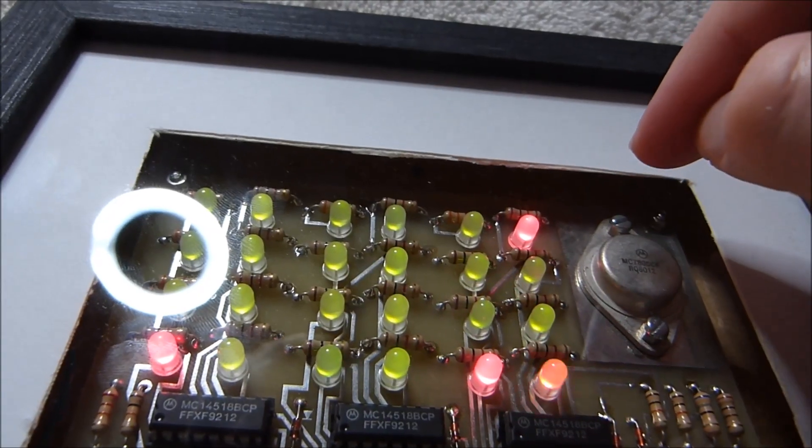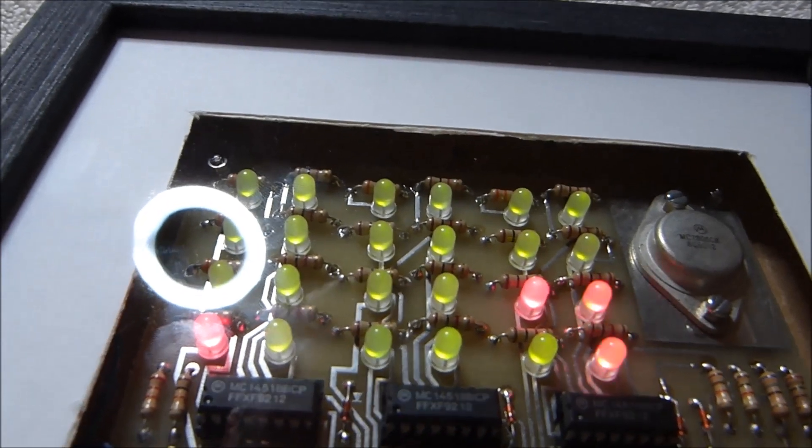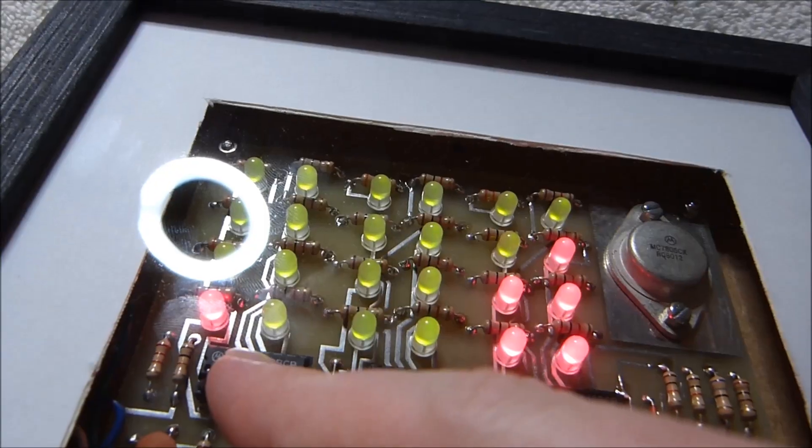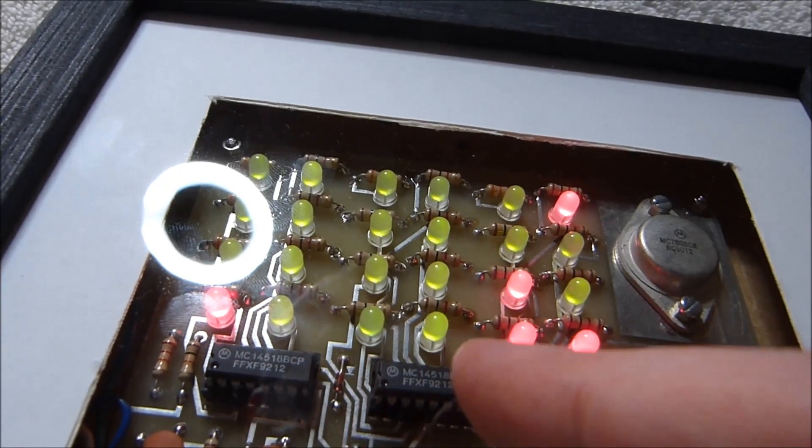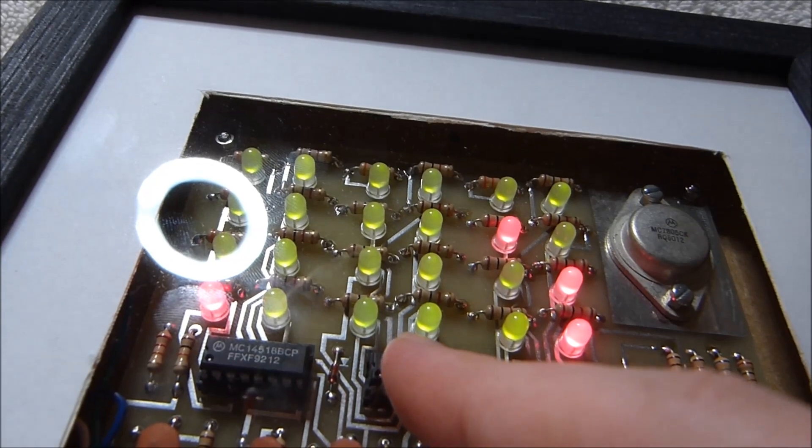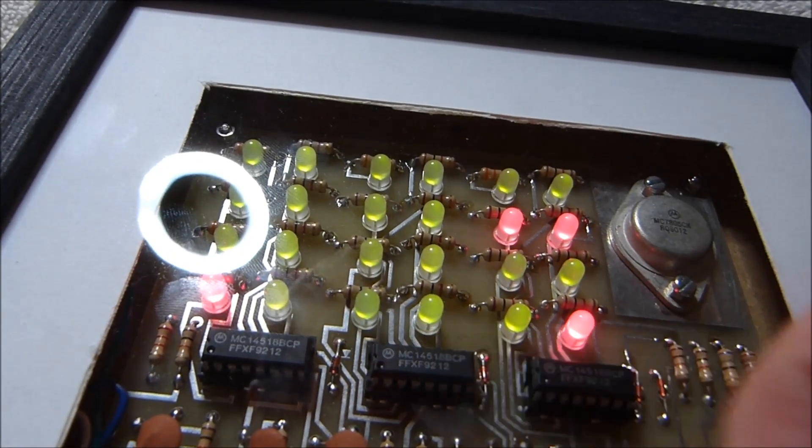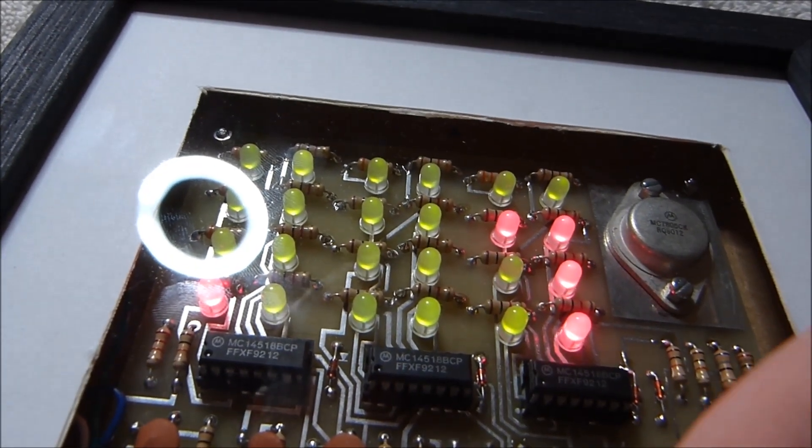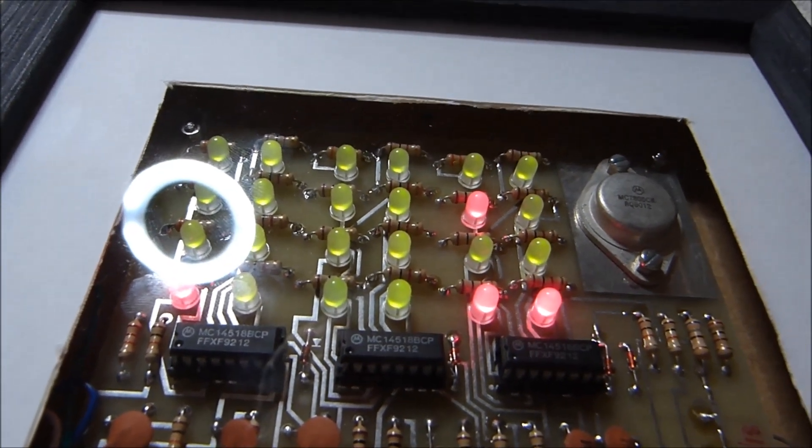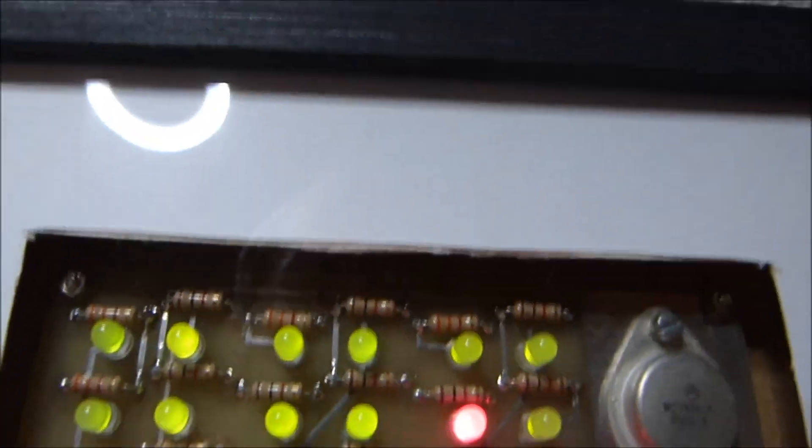There was one significant design flaw on this clock, which I did correct. Although unfortunately I didn't notice it until after I had already finished building it. The absolute maximum rating for any of the outputs on these 4518 BCP chips is 10 milliamps. The recommended rating was like 6.8 milliamps, and they were running them right around 10.